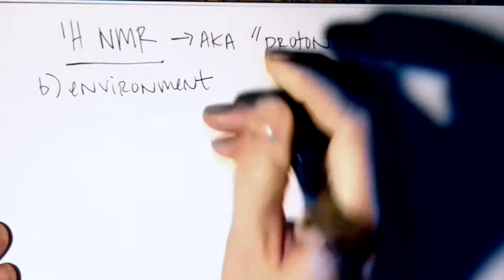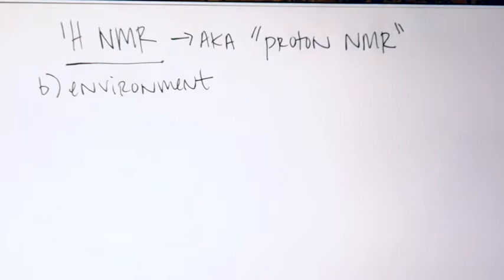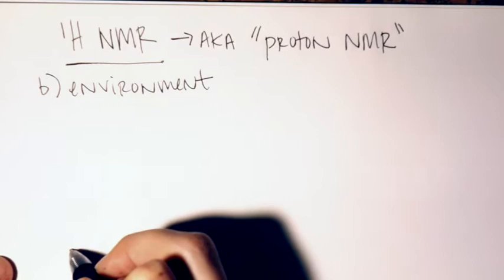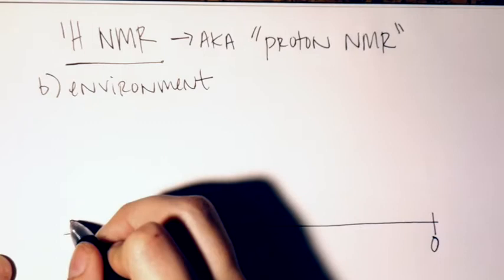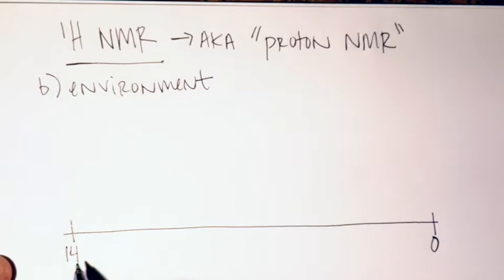The environment, just like for carbon NMR, tells you where things are in the molecule and what kind of attachments they have. Going through the major dividing lines, similar to what we did with carbon, we start at zero in the upfield region. For proton NMR the numbers only go to about 14 — you don't generally see anything past 14. In this NMR spectrum we're detecting the hydrogens, not the carbons, though most hydrogens are attached to carbons.